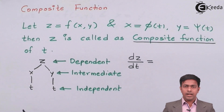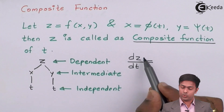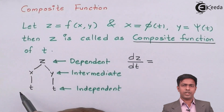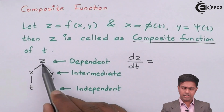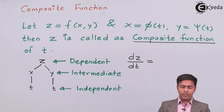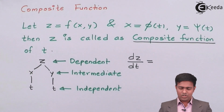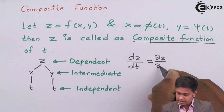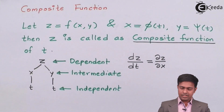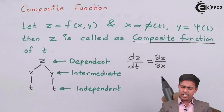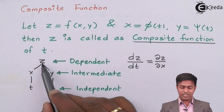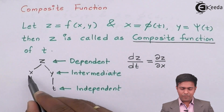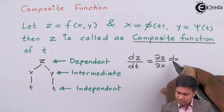As per the chain rule, we travel from the dependent variable to the independent variable — here from Z to T. There are two paths: Z→X→T and Z→Y→T. For the first path, Z to X, I write del Z/del X. The partial symbol is used because when differentiating Z with respect to X, Y is treated as constant. From X to T it becomes dx/dt — complete differentiation — because X is a function of T only, with no other variable present.